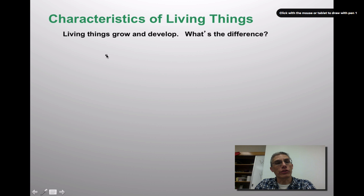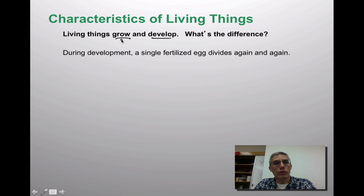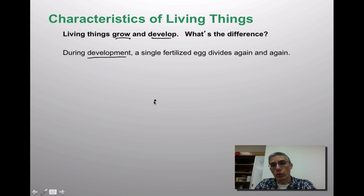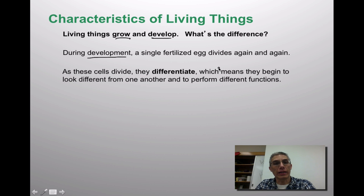The next characteristic is that living things can grow and develop. We need to think about what is really the difference between growing and developing. Growing most of us think of as simply increasing in size — getting taller or bigger. But when you think about development, you need to think about the word change. What you looked like as a baby is very different from what you look like now. During development, a single fertilized egg divides again and again, and as it divides, these new cells are going to differentiate — meaning they look different from one another and perform different functions within the organism.